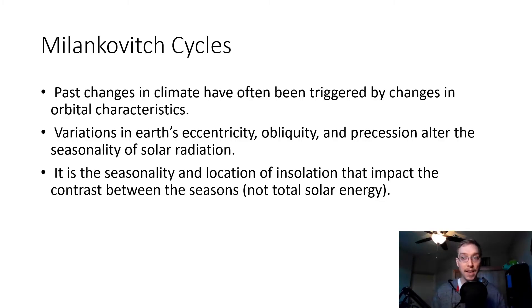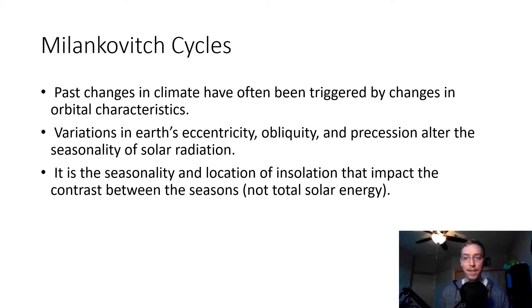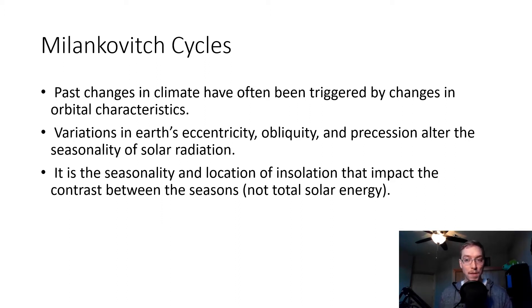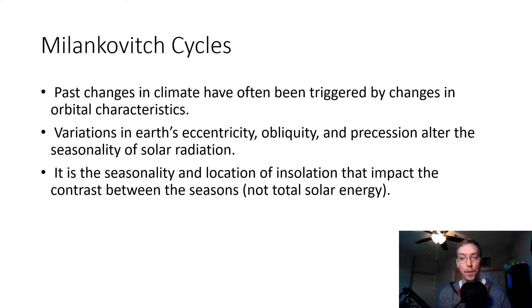Very famously, the Milankovitch cycles explain some of the variations in earth's orbit that drive shifts in insolation incoming into the planet. A century ago, Serbian scientist Milutin Milankovitch hypothesized that the long-term collective effects of changes in earth's position relative to the sun are a strong driver of earth's long-term climate, and are responsible for triggering the beginning and end of glacial periods — ice ages. Specifically, he examined how variations in three types of earth's orbital movements affect how much solar radiation reaches the top of earth's atmosphere.